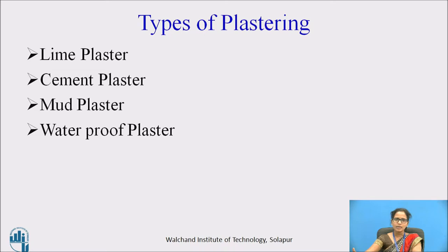Plastering should be applied in one or two coats. A single coat will have a thickness of 12 mm. For cheaper or inferior type of construction, plastering may be done in one coat. For ordinary type of construction, plastering can be done in two coats. For superior type of construction, you can go for three coats. It depends upon the type of building and type of construction.